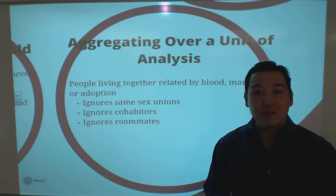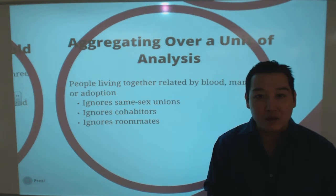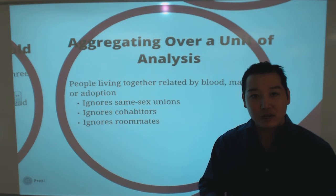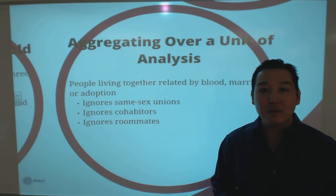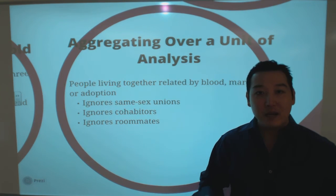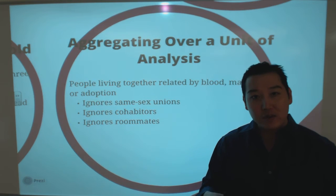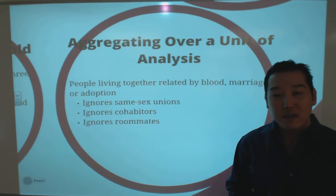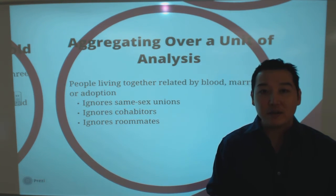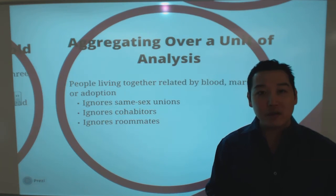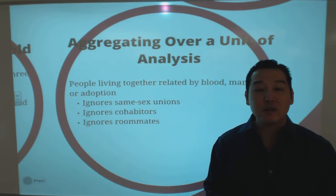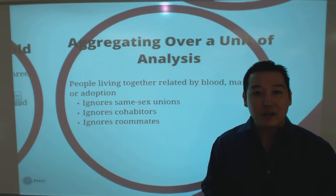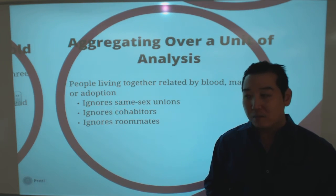For the unit of analysis, the Census Bureau uses the family unit — not the household or the individual. Anyone related by blood, marriage, or adoption has their resources counted together. A boyfriend, girlfriend, same-sex partner, or dorm roommate's income would not be counted in the official poverty estimates.